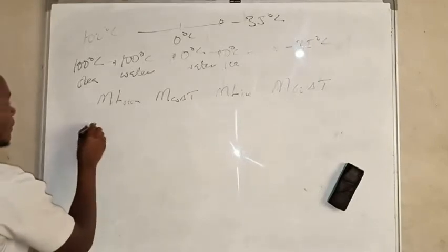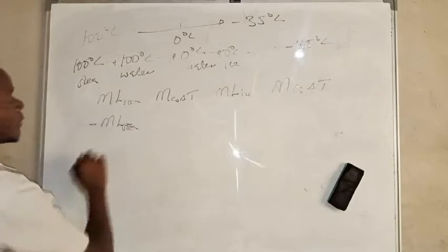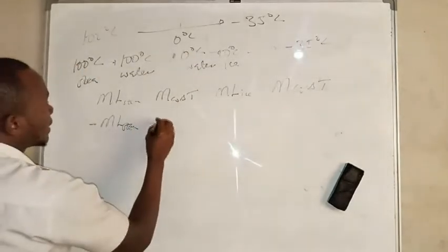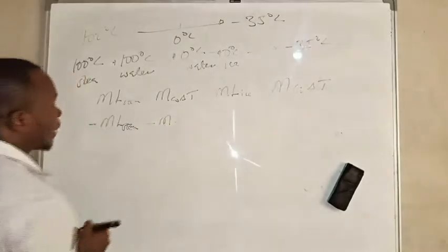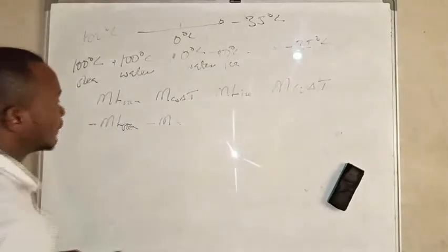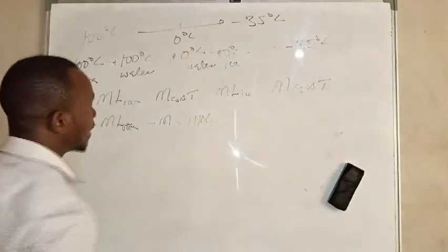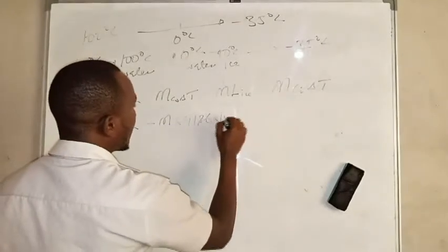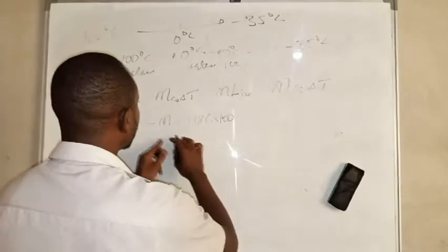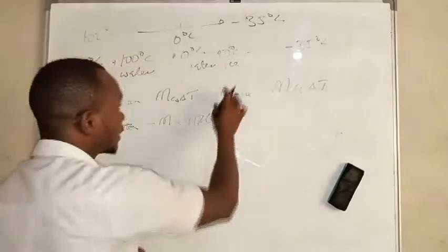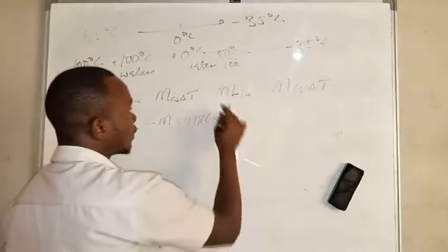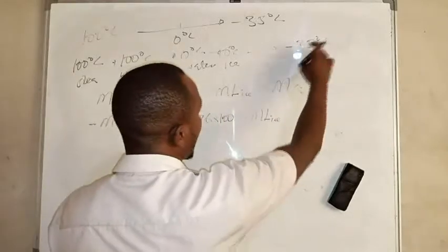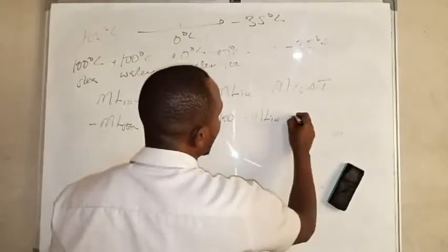Since the steam is condensing — not evaporating — this term is negative, giving us minus mL_steam. For cooling water from 100 to 0°C, the final minus initial gives zero minus 100, so we have a negative term: minus m·c_water·(100), where c_water is 4.186 J/g·°C. For freezing at zero degrees, when ice is forming this is a negative value, so we have minus mL_ice. For ice cooling, the temperature change is negative 35 minus zero, giving us minus m·c_ice·35.